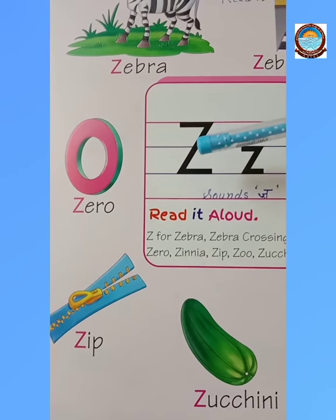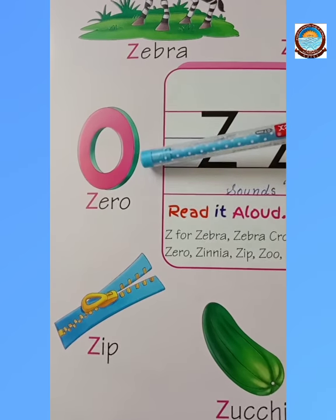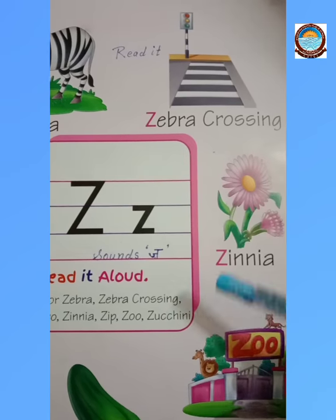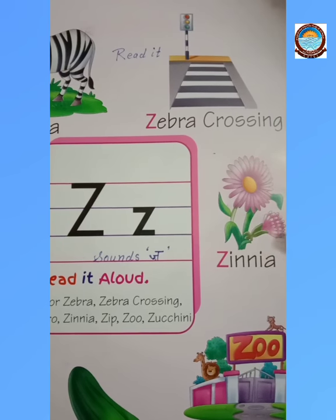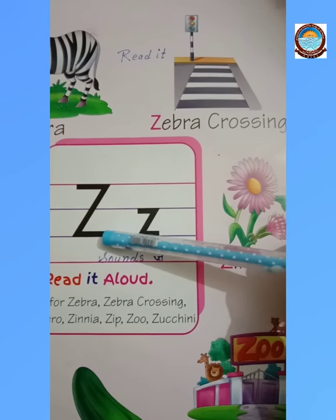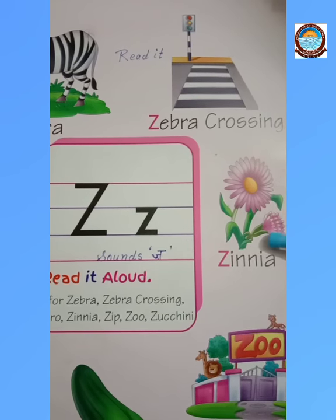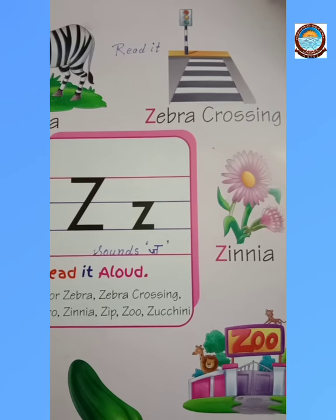Z — zero. Zero. Z — zinnia. Zinnia is a flower.